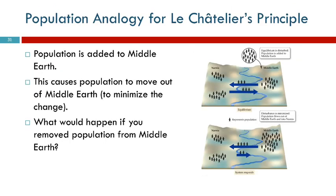So what does that look like? Back to Narnia and Middle Earth. We had an equilibrium here. We had people immigrating from one side to the other because people move around — it's always greener on the other side of the fence. So people are moving back and forth, but overall the population of Narnia is constant and the population of Middle Earth is constant.